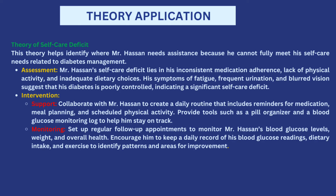Based on the theory of self-care deficits, Mr. Zan's deficits lie in his inconsistent medication adherence, lack of physical activity, and inadequate dietary choices. His symptoms — fatigue, frequent urination, and blurred vision — suggest poorly controlled diabetes with potential complications setting in. Interventions include collaborating with Mr. Zan to create a daily routine with medication reminders and a meal planning schedule, providing tools such as a pill organizer and blood glucose monitoring device. Follow-up appointments are set to monitor blood glucose levels, weight, and overall health, and he is encouraged to keep a daily record of readings, dietary intake, and exercise.